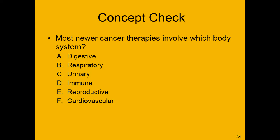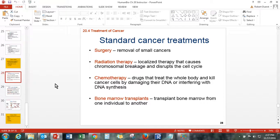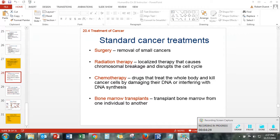Five, four, three, two, one. The correct answer is the immune system — D is our correct answer. And that's all we have for this chapter. If you have any questions about this material, please feel free to shoot me an email, post on the class discussion board, or swing by my office when you're on campus. Happy studies.